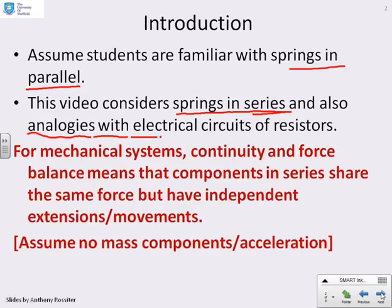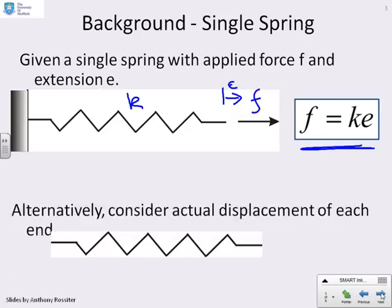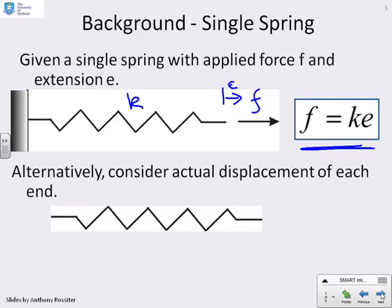As ever, we're going to assume no mass components or acceleration, so the focus is on steady state. A reminder of the background: if we have a simple spring with an extension e, an applied force f, and a stiffness k, then the model is f equals ke. However, it is possible that both ends of the spring are moving, so one end might be moving by y and the other end might be moving by x.